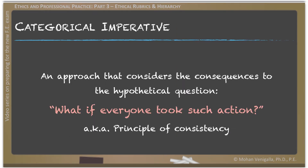There are a couple of tests performed as part of categorical imperative. The first one is the principle of consistency, or test of consistency. It asks the hypothetical question: what if everyone took such an action? That action is considered consistent if everyone accepts it. But there is one problem — it ignores the consequences.